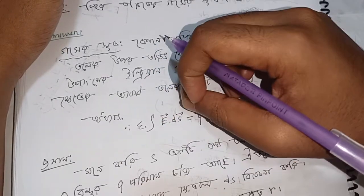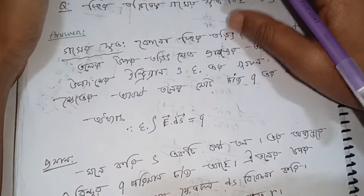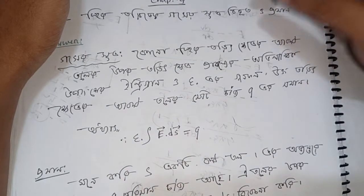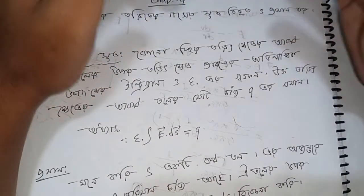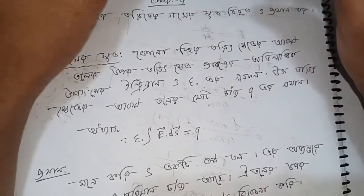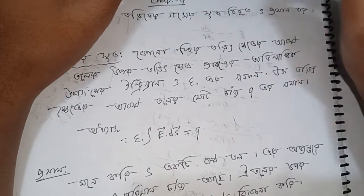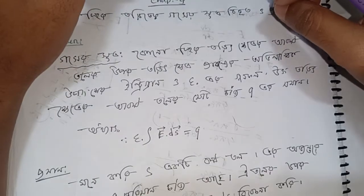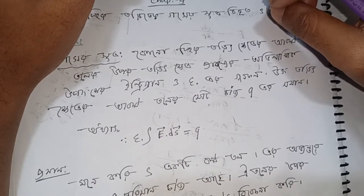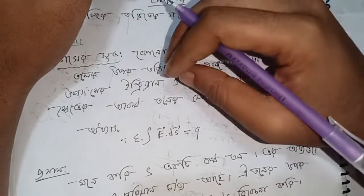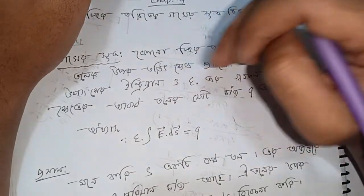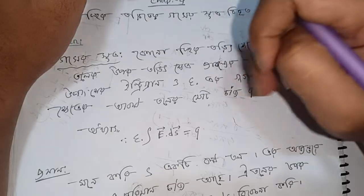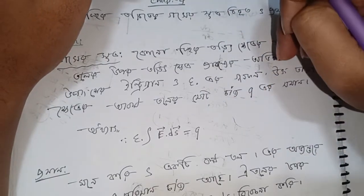E vector cross ds vector, q otherwise the closed surface integral of e vector cross ds would be equal to q. For the closed surface integral of ds vector, when we take the closed surface integral of e vector dx, what we will see in the closed surface integral of ds vector is equal to q.